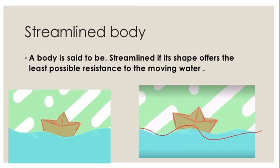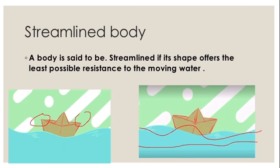The boat moves in such a way that the paper at the two ends shows the direction of the water. When you make a boat, you see it is broad in the middle and tapered at the ends — tapered means sharp at the ends. In the middle it is broad — why is it so?